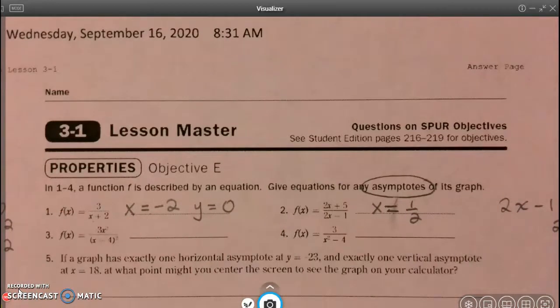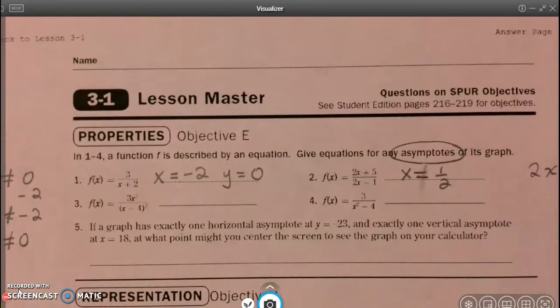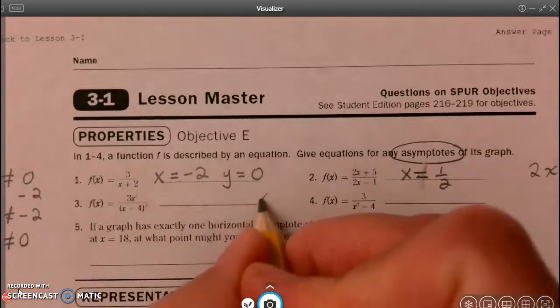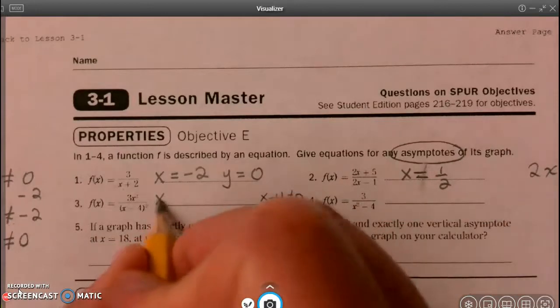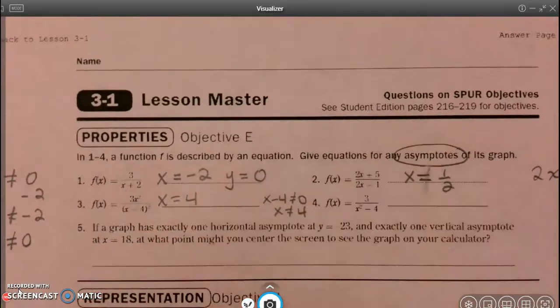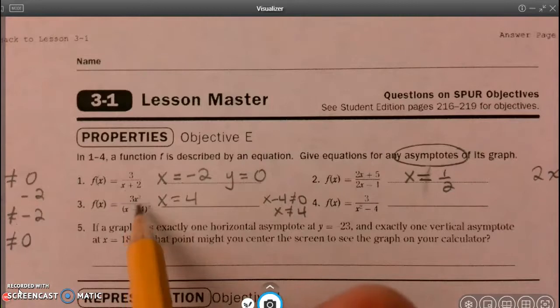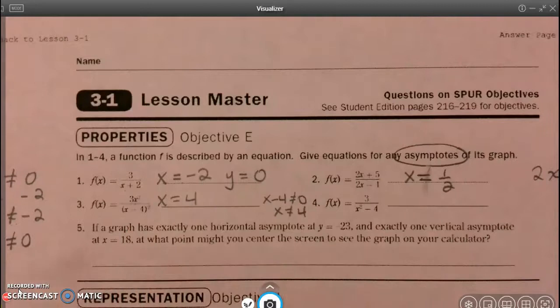All right, let's go to number 3. In number 3, the denominator, x minus 4, we can't let that equal zero. So if x minus 4 can't equal zero, that means x can't equal 4. So I have to have an asymptote there. Now, I could have a zero in the numerator, and that would be okay. And that would get the value of the function to be zero. So y is allowed to be zero in number 3 as well.